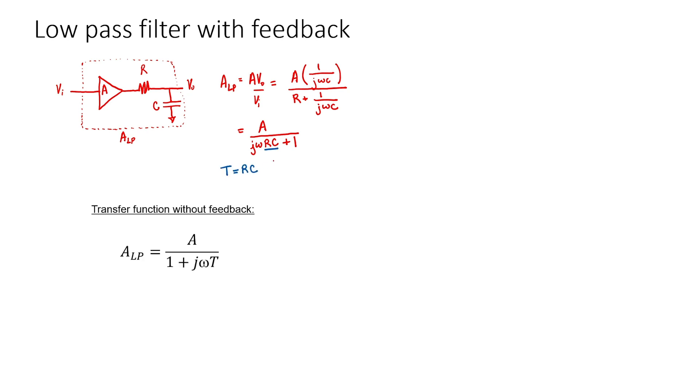To show how this is done, let's look at both sides separately. Let's start with the low-pass side. Let's call the overall gain of this low-pass filter ALP. So this particular low-pass filter also has gain built into it. We can use voltage division to find the transfer function. I can identify RC as the time constant or the period. Therefore, I've found the transfer function of this low-pass filter without feedback.